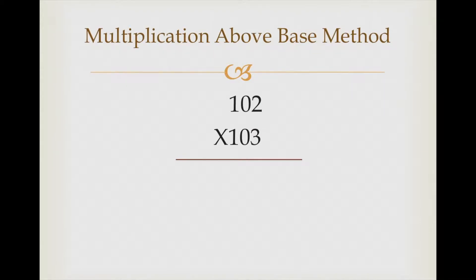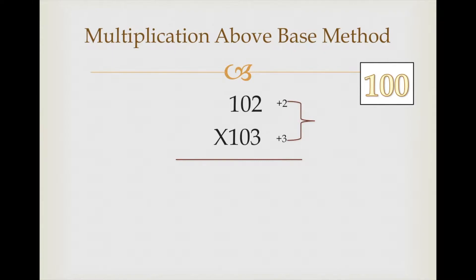Let's take one more example: 102 multiplied by 103. Here the base is 100. 102 is 2 above base, write down 2. 103 is 3 above base, write down 3. Multiply these two digits and we get 6. But since base 100 has two zeros and the product is a single digit, we cannot write 6 directly — we prefix a zero and write 06.